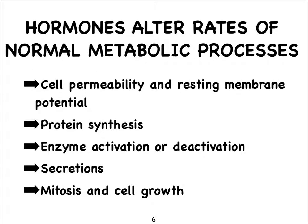So what do these chemical messengers that we call hormones really do? They help with the maintenance of homeostasis by changing the rate of metabolic processes. Examples include the permeability of a cell with the opening or closing of ion channels, which can impact the resting membrane potential — similar to neurotransmitters. Hormones can change the rate at which protein synthesis occurs in the cell and which enzymes become activated or deactivated. They can trigger the secretion of exocrine glandular secretions and can impact mitotic divisions such that more cells are produced.